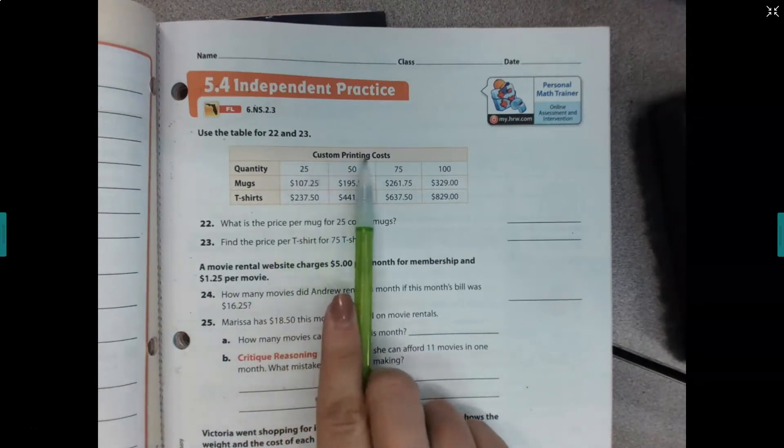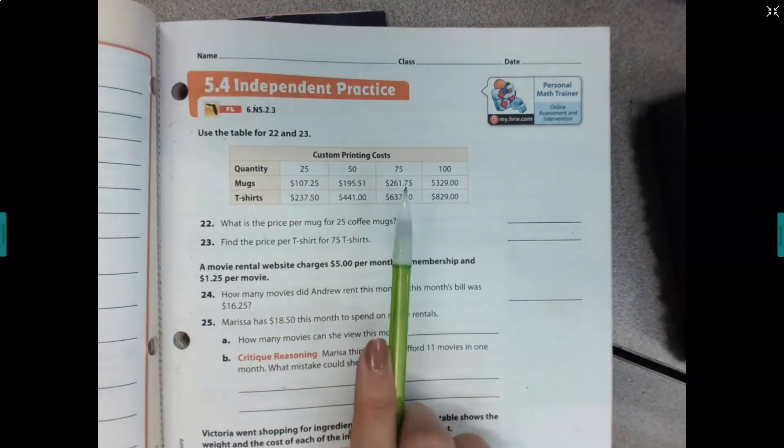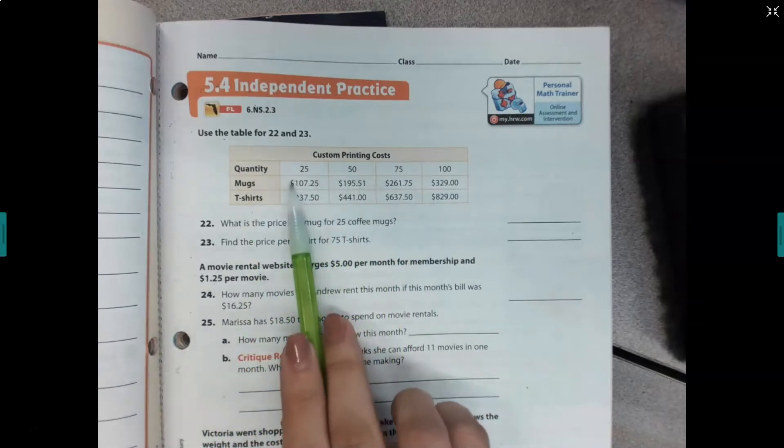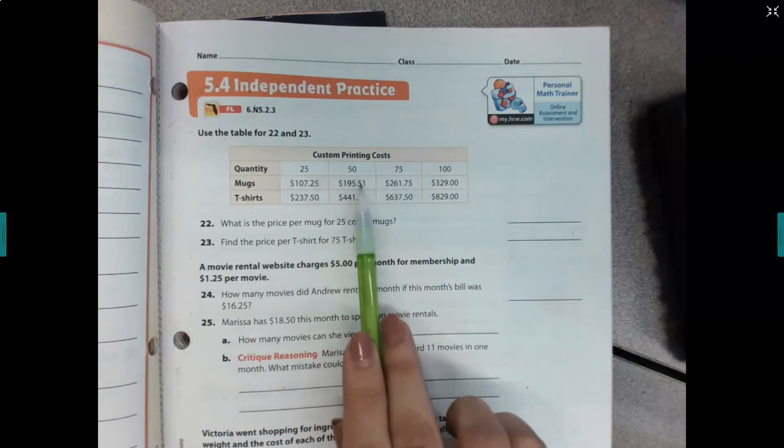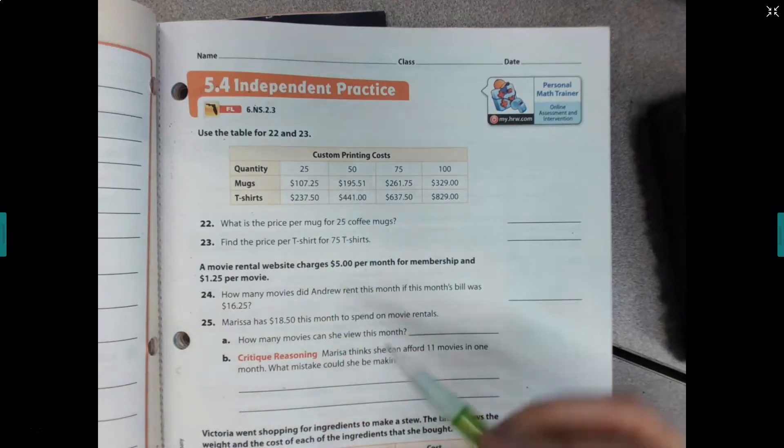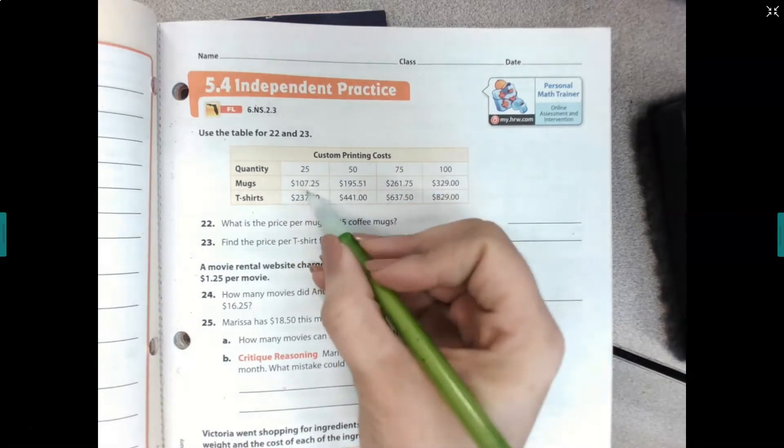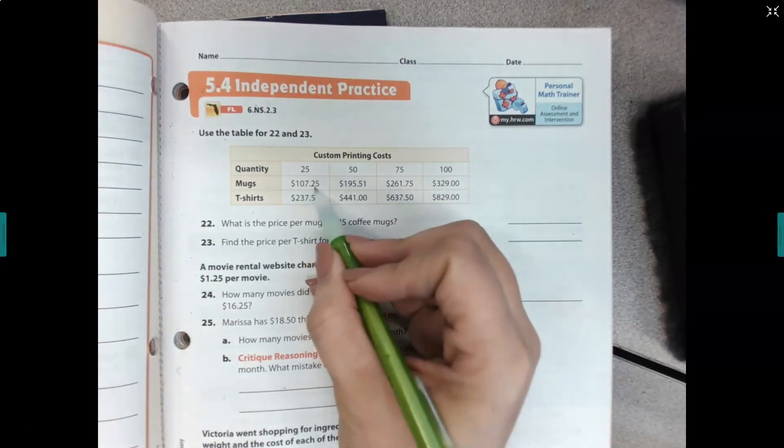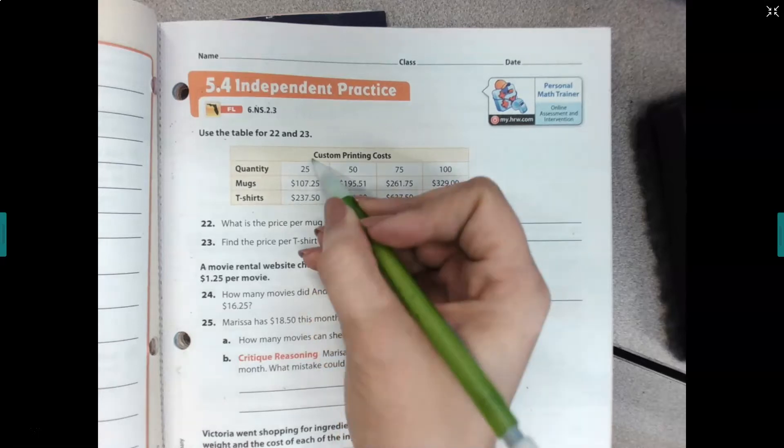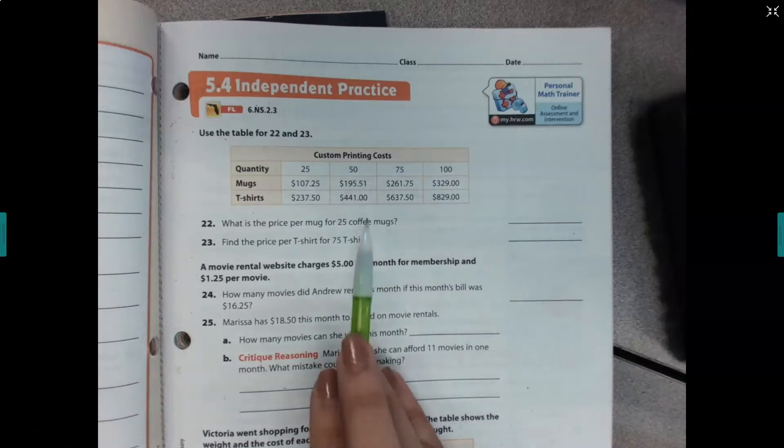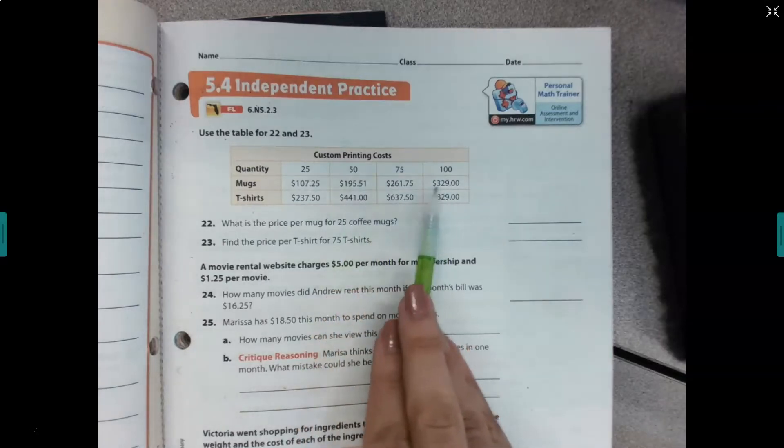We have custom printing costs with different quantities in increments of 25, and then there's mugs and t-shirts. These represent the total amount if you were purchasing that amount of mugs or shirts. So if you wanted to buy 25 mugs, it would cost $107.25. If you wanted to buy 25 t-shirts, it would cost $237.50.